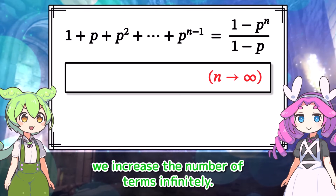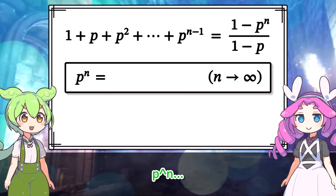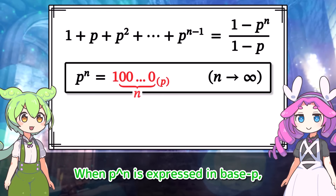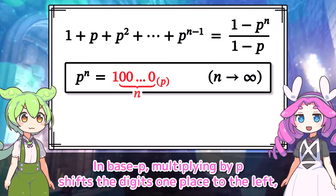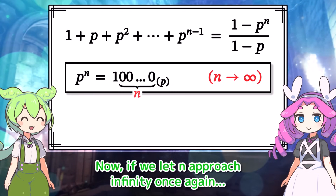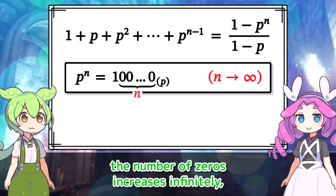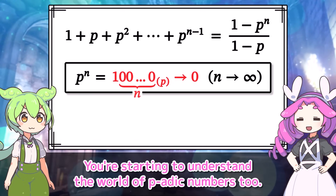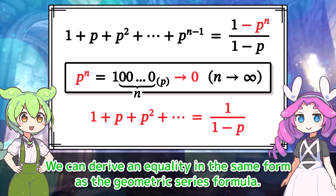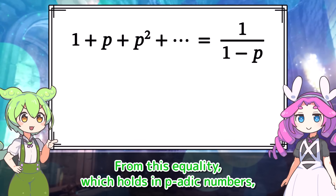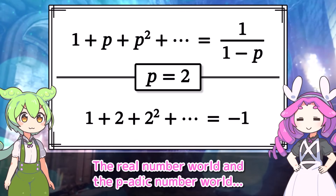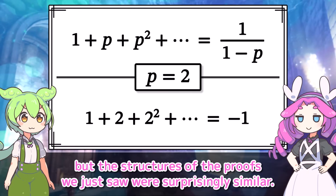Now let's try doing the same thing in the world of P-adic numbers. First, let's substitute P for r in the formula for the partial sum of a geometric sequence. We get an equality like this. Since this is a finite sum, we don't need to worry about convergence. Then we increase the number of terms infinitely — letting n approach infinity. When P to the n is expressed in base P, multiplying by P shifts the digits one place to the left, so multiplying by P n times starting from 1 gives 1 followed by n zeros. If we let n approach infinity, the number of zeros increases infinitely, so in the P-adic world, this converges to 0. Therefore, since P to the n converges to 0, we can derive an equality in the same form as the geometric series formula. From this equality, if we specifically consider P equals 2, we indeed arrive at this equality. The real number world and the P-adic number world have vastly different properties, but the structures of the proofs were surprisingly similar.